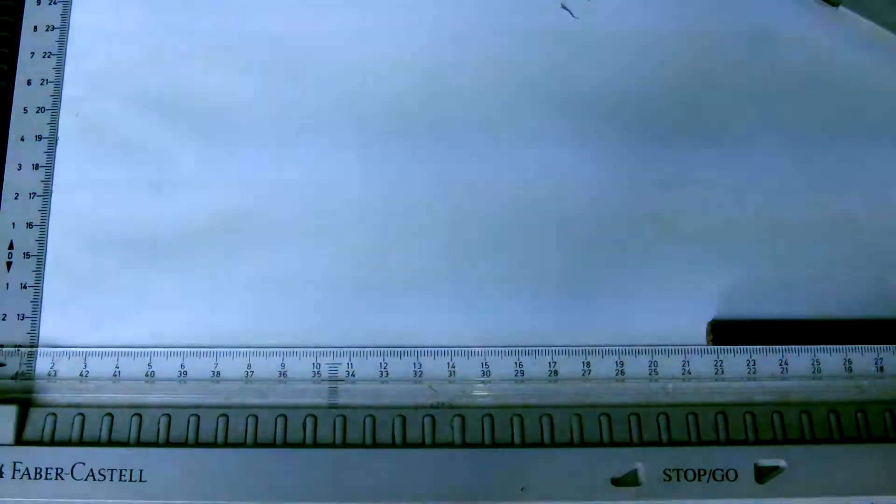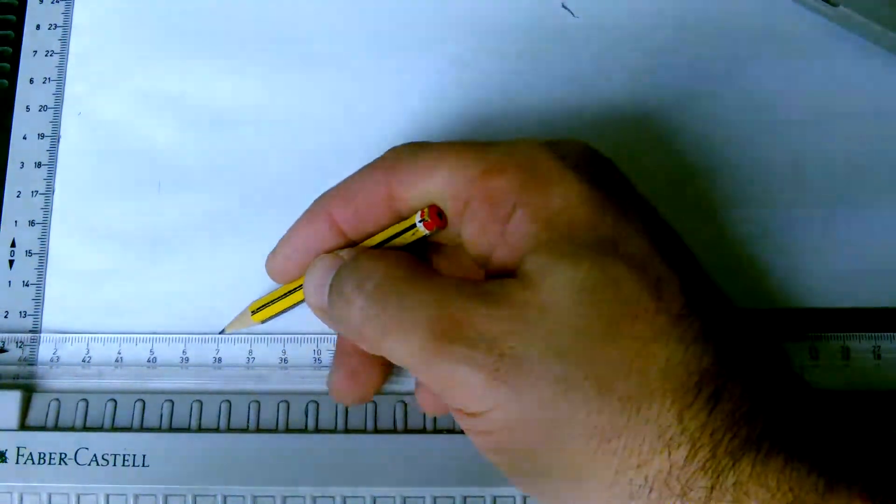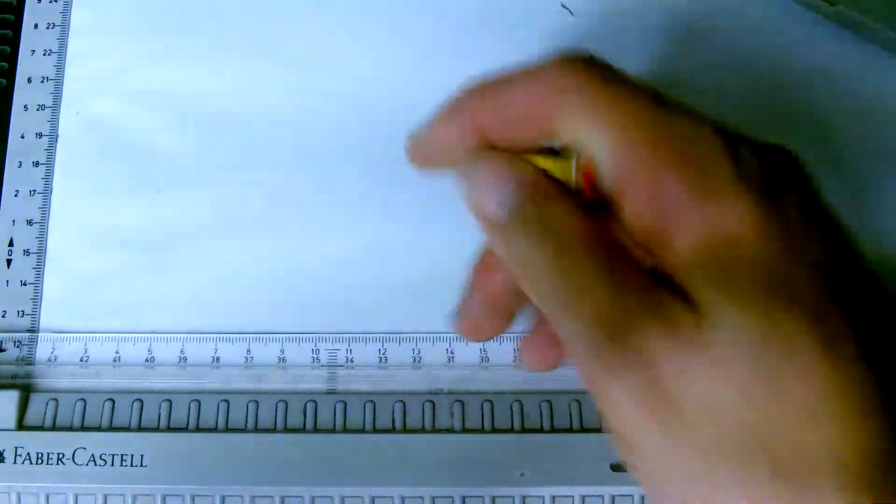So that would be a regular octagon. Let's say its sides are 30 millimeters each. I'm going to start off with a base, 30 millimeter base.